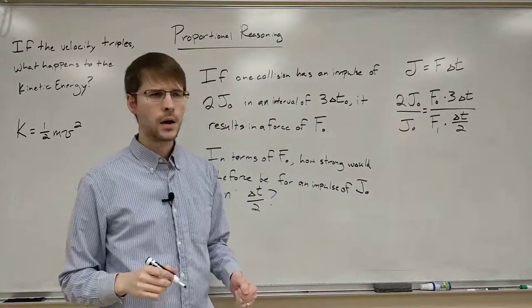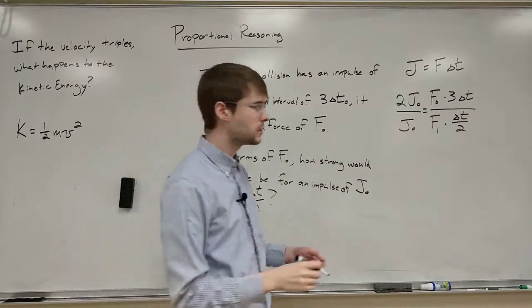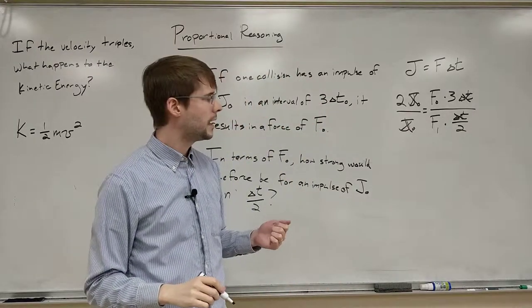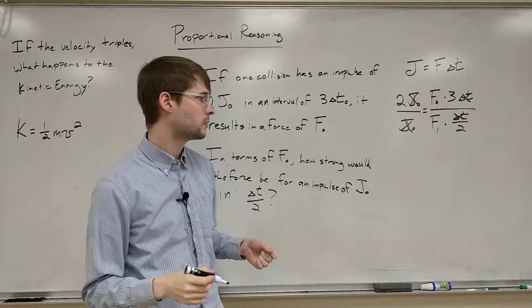Alright, and now what we've got is 2j0 over j0, and so those should cancel. And our delta t's are going to cancel, and let's go ahead and rewrite this, and then solve for f1.